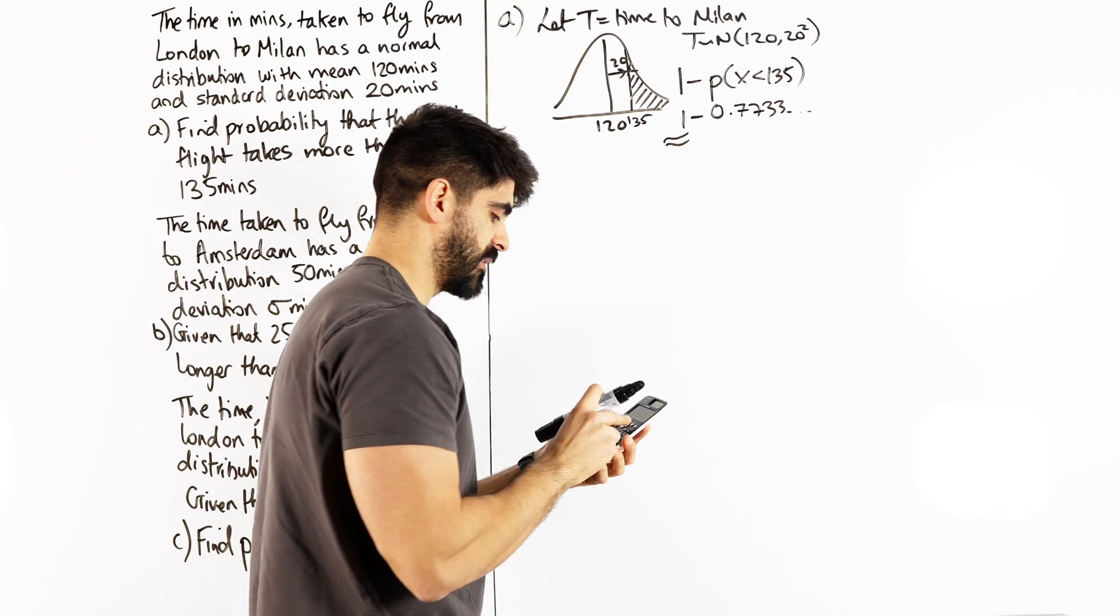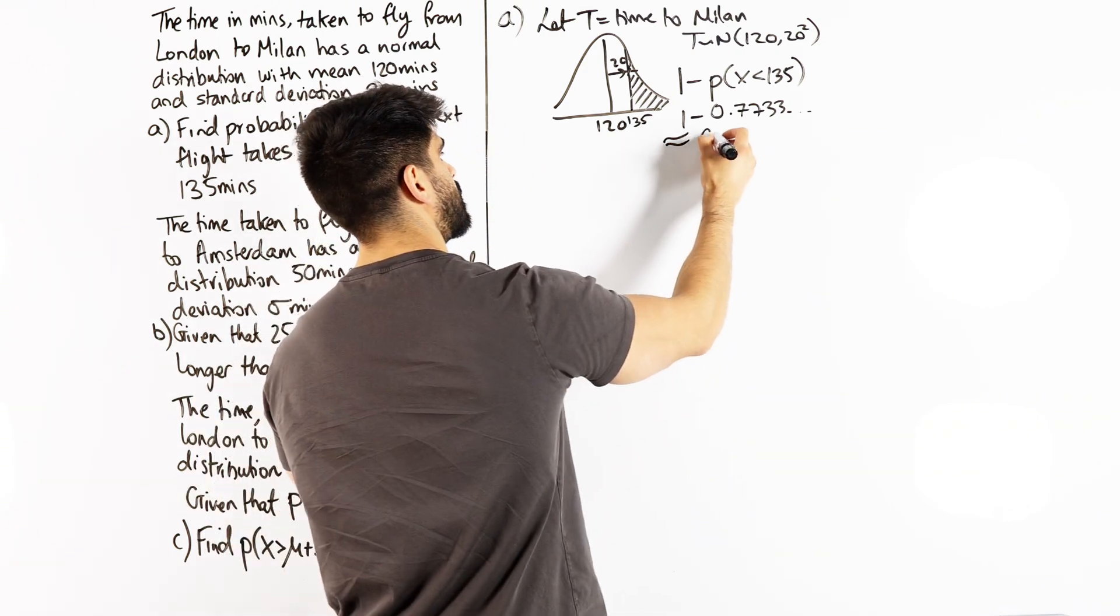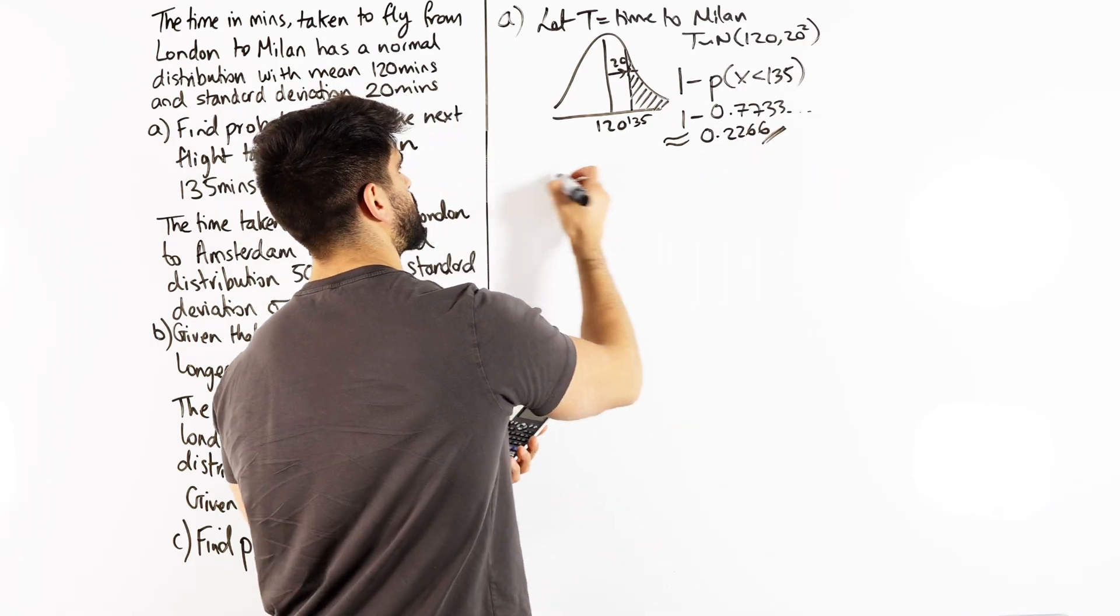And then we're just going to do 1 minus answer. So menu 1, 1 minus answer, about 0.2266. So for normal distribution, 6 to 4 decimal places.